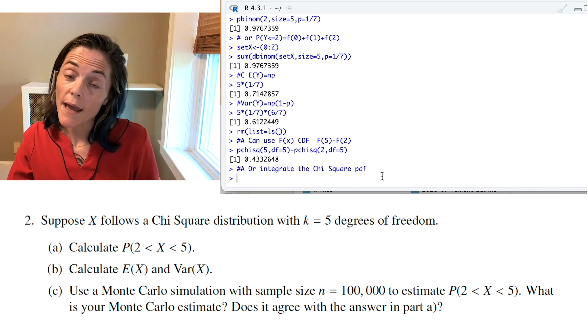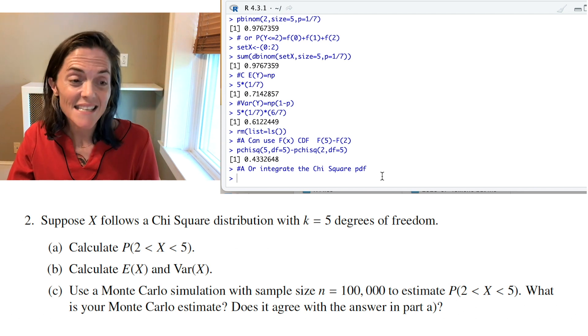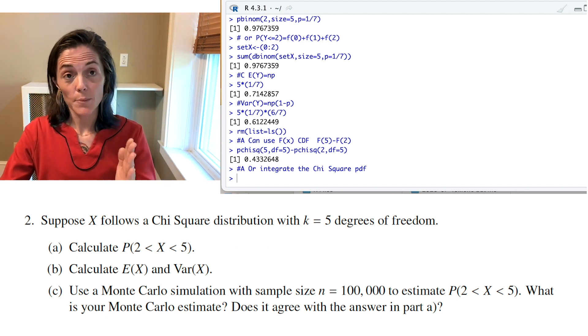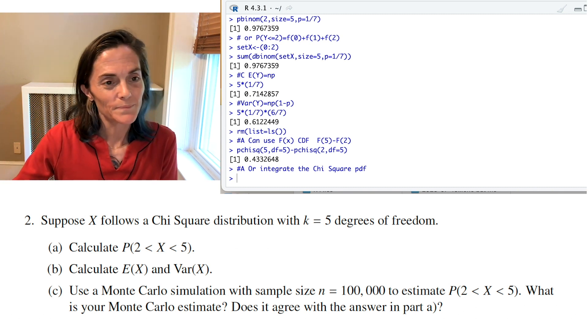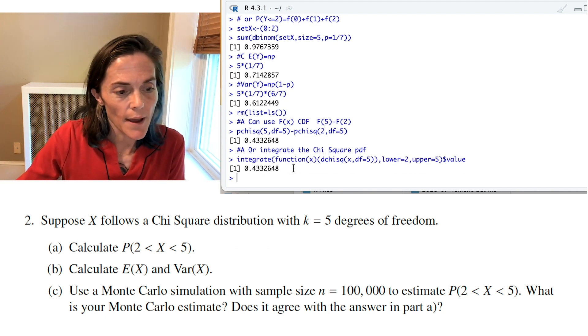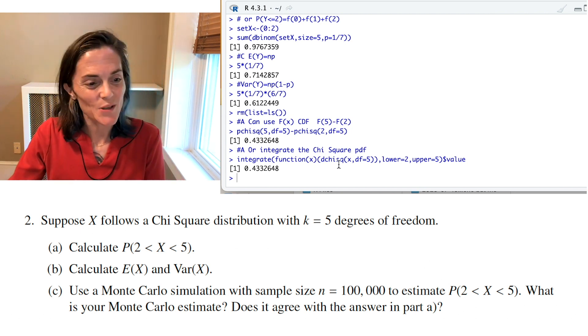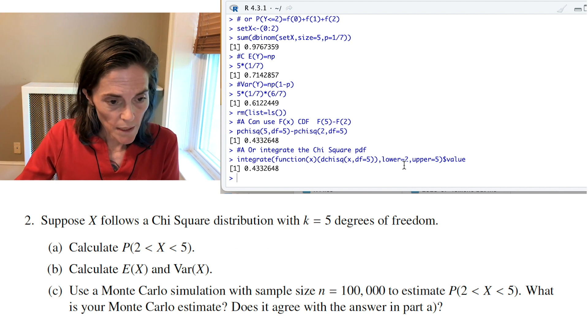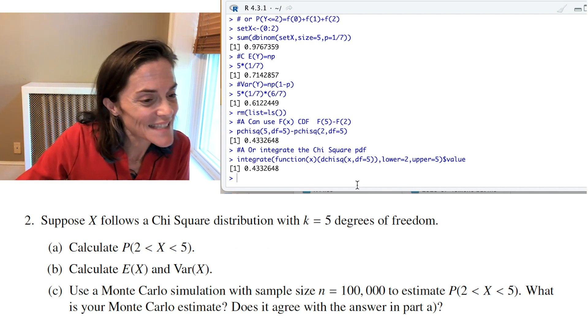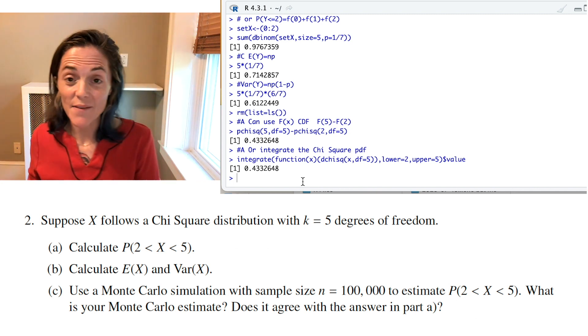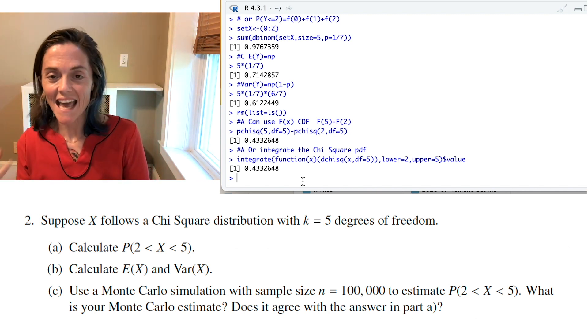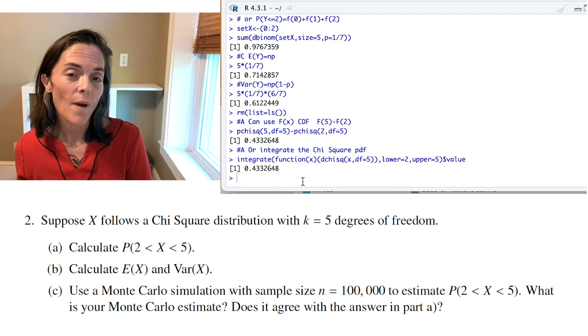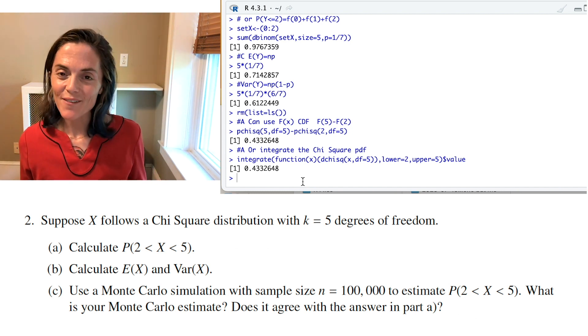For continuous random variables, the probability that capital X equals any given value is 0. And so, it makes calculations just slightly simpler with the cumulative distribution function. Okay. Now, that's not the only way we can do part A. The other way is we can integrate the probability density function. Probability density function has a D as a prefix. So, I integrate D chi-square with 5 degrees of freedom. The lower limit is 2, upper limit is 5. And you see, both times I get the same value. Of course, I should. That's the actual value of the probability. I've just calculated it two different ways. You can choose which way you prefer.